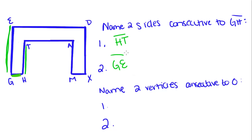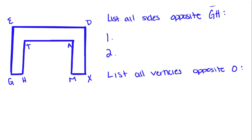So name two consecutive vertices to O. This one is next to this one, but it's also next to this one. So now list all sides opposite G, H. G, H is right here. Opposite sides are sides that fall across from this side. So E, O falls opposite it, and that is the only one that's opposite G, H.